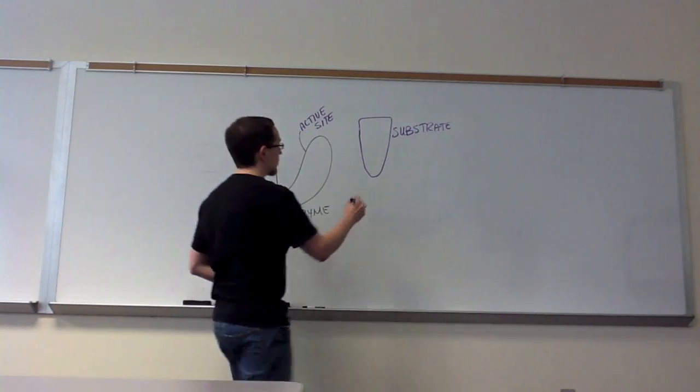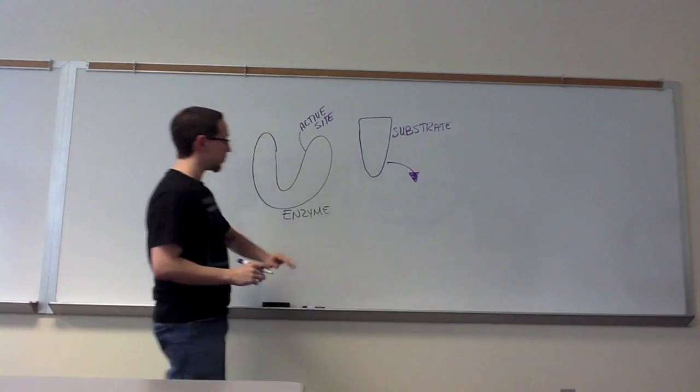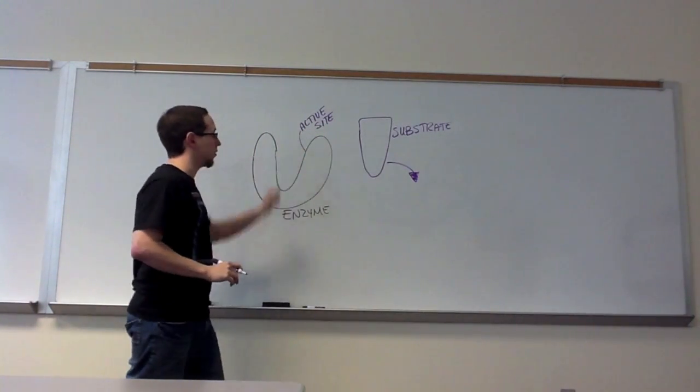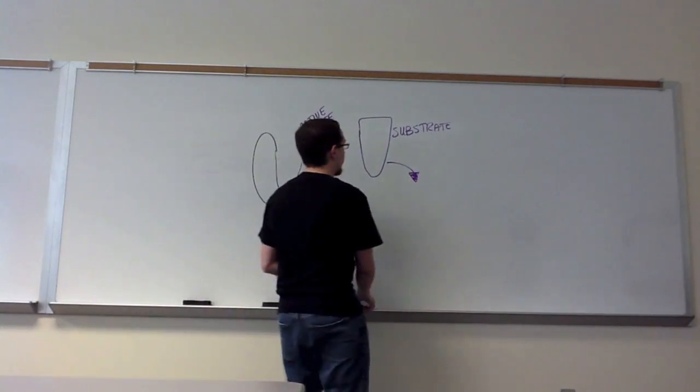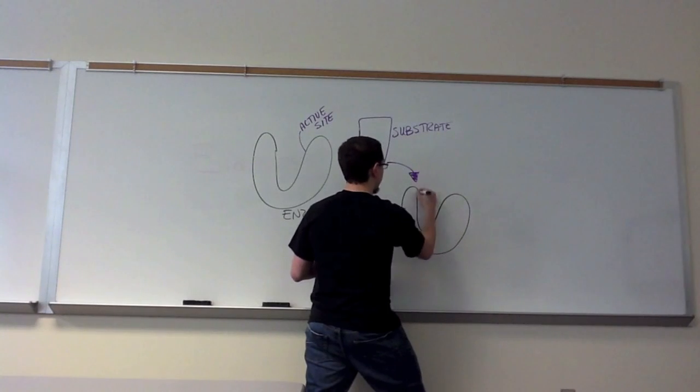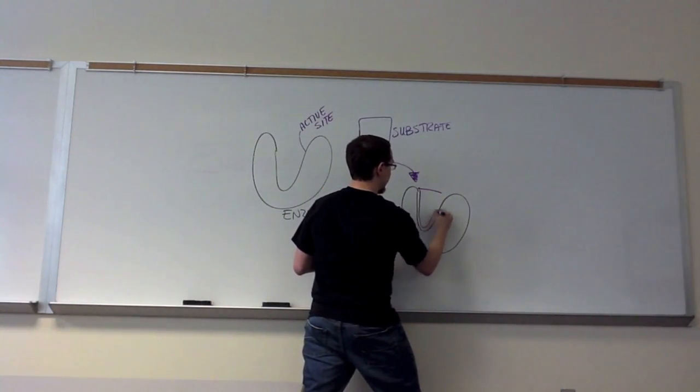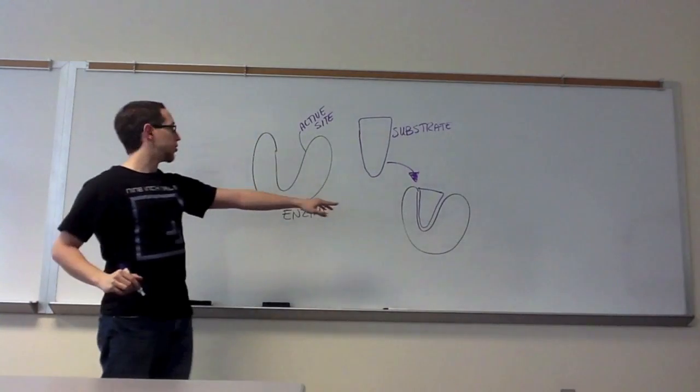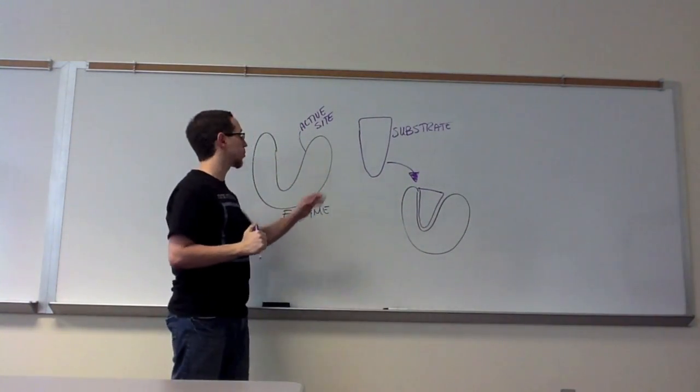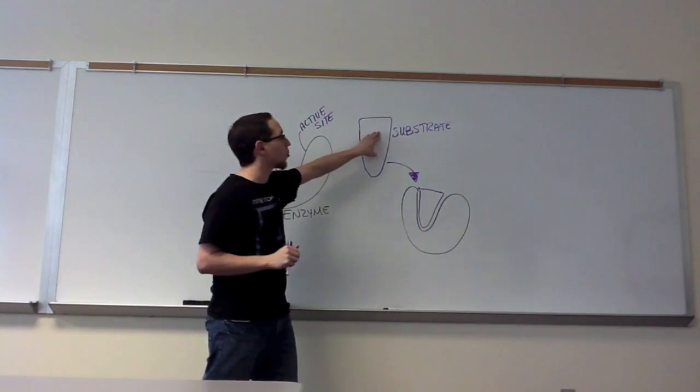So what happens is, in a biological context, the enzyme and substrate have interactions between the substrate and the active site of the enzyme, and they form what's known as the enzyme-substrate complex. Basically, the way you can think of it is, the substrate fits neatly into that active site. Now, there's not 100% match, but it's close enough to where there is a very strong affinity for this substrate.